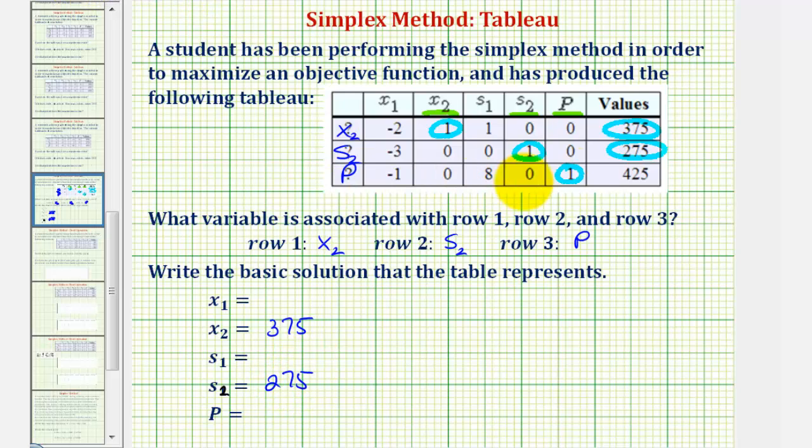And then finally looking at the third row, this tells us one times p, or p equals four hundred twenty-five.